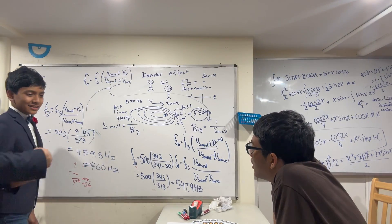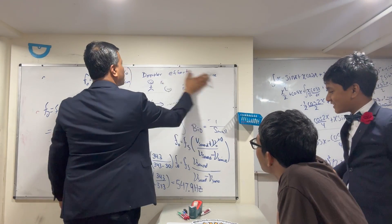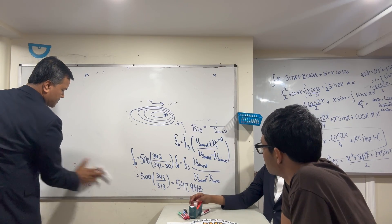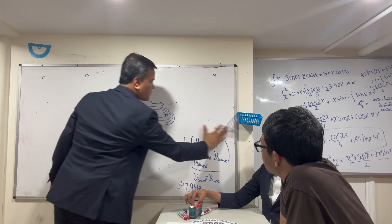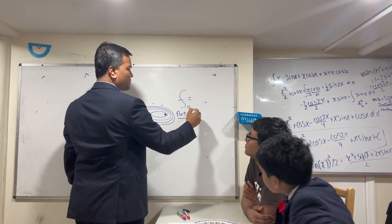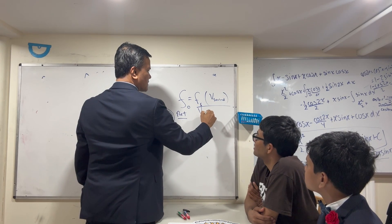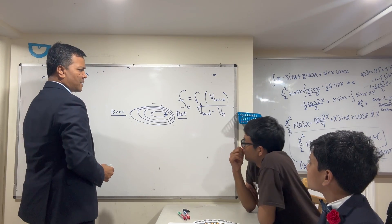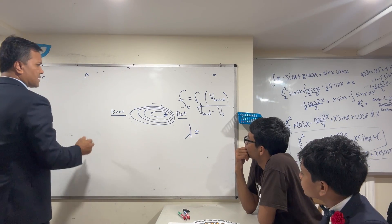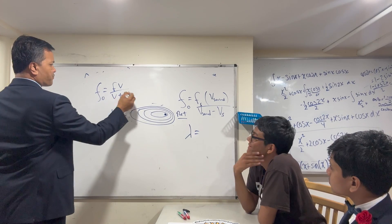Now I'm going to give you a challenge. I want you to write lambda for Isaac and lambda for Raf. There is an inverse relationship between lambda and frequency. The observed frequency is f_source × (v_sound ± v_observer) / (v_sound ± v_source). I want you to now write the wavelength equations for both Raf and Isaac.